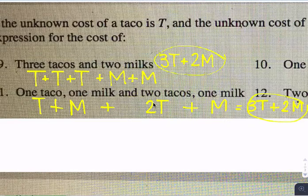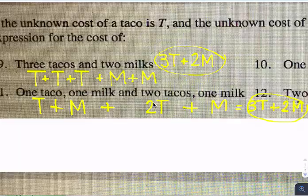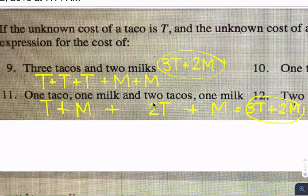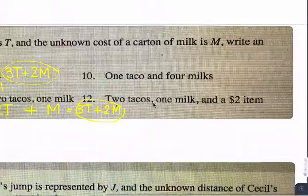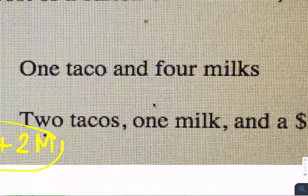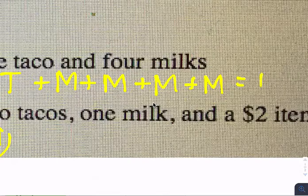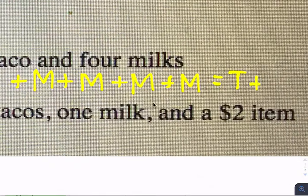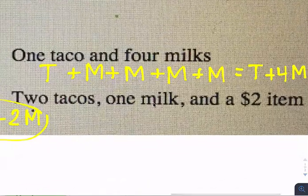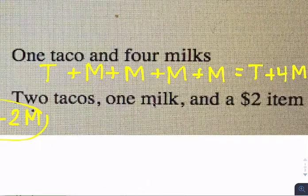Either one of those is acceptable, but it would be a good idea to simplify if you can. Then we have one taco, four milk, so taco plus milk, plus milk, plus milk, and then all together that would be one taco plus four milk.